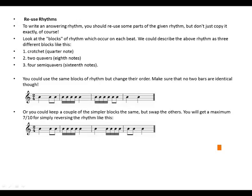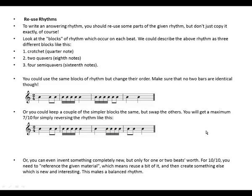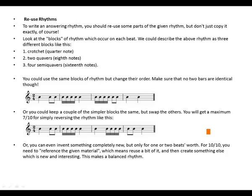So you can reverse bar three and bar four, or you can even invent something completely new, but only for one or two beats' worth. To get 10 out of 10 you need to reference the given material — which means reuse a bit of it — and then create something else which is new and interesting. This makes a balanced rhythm.